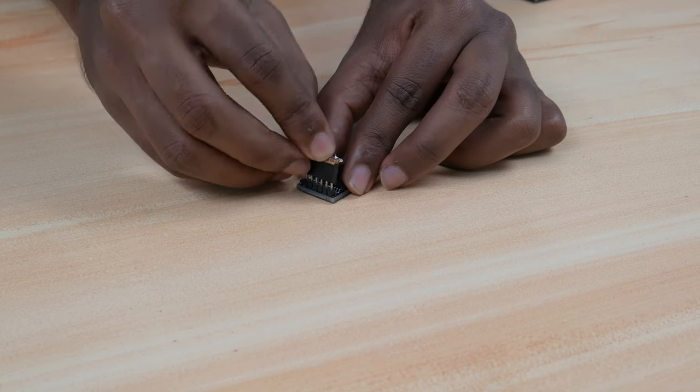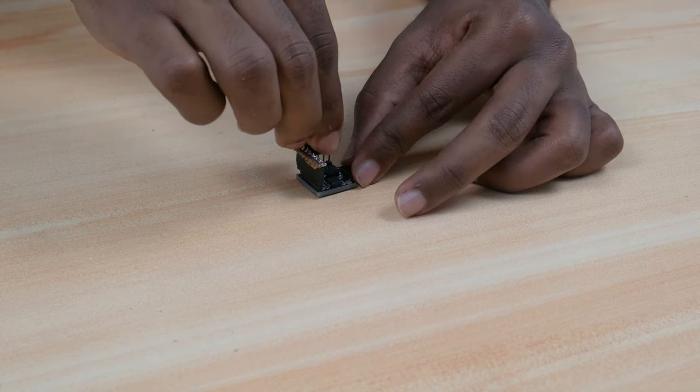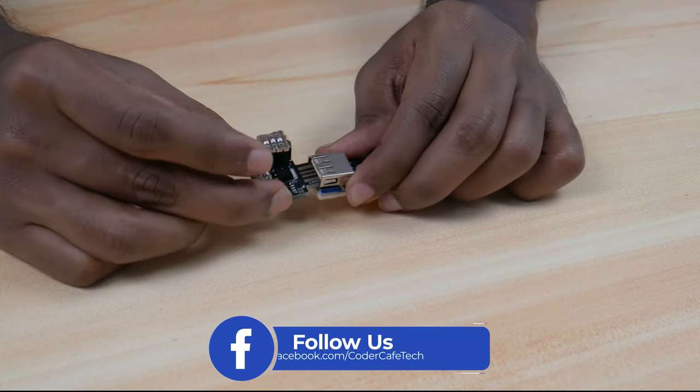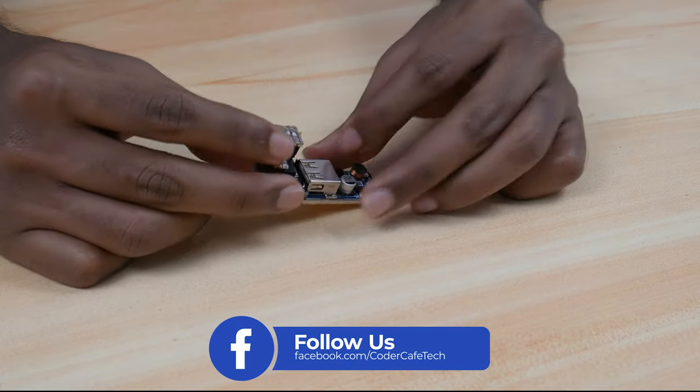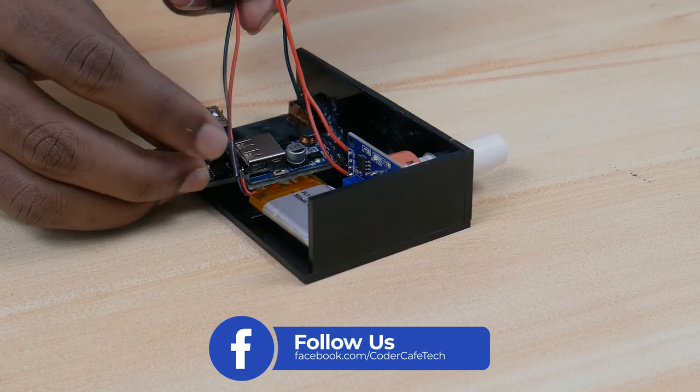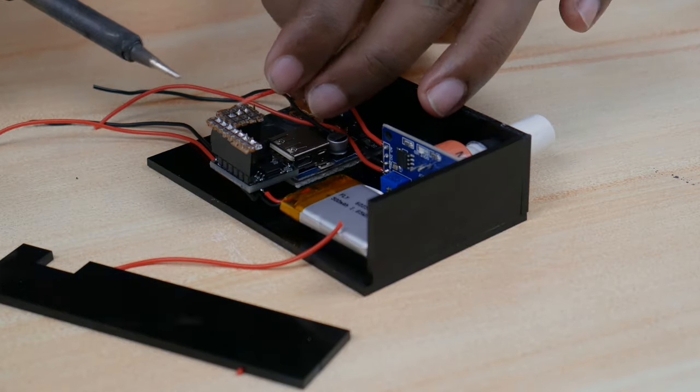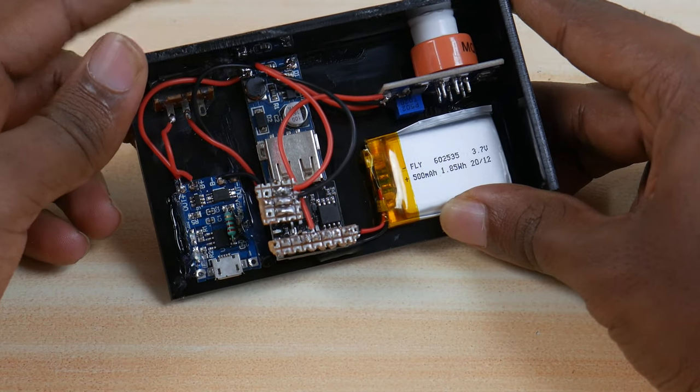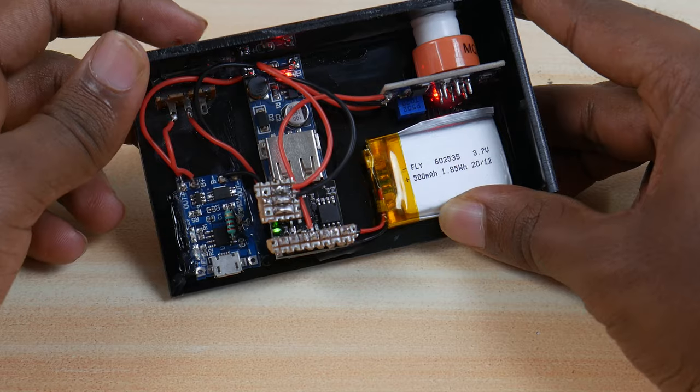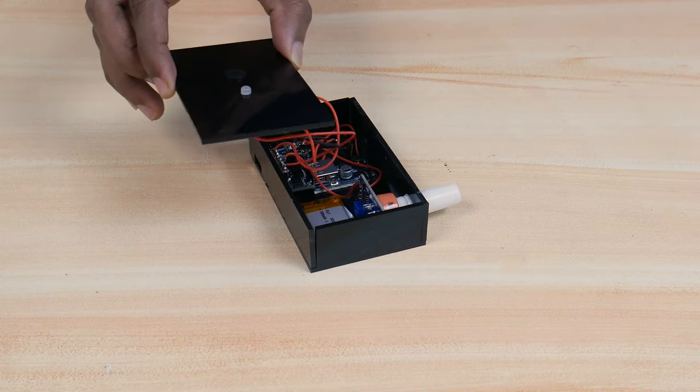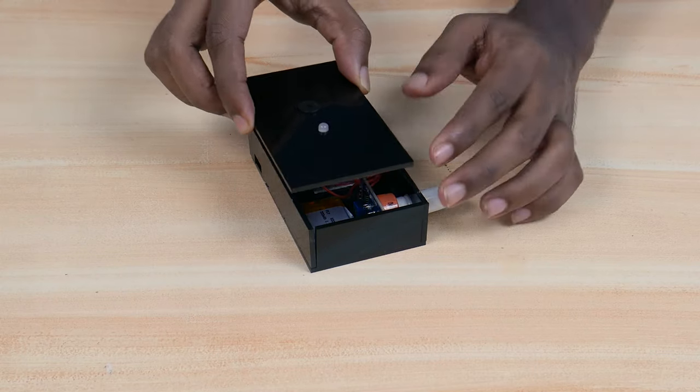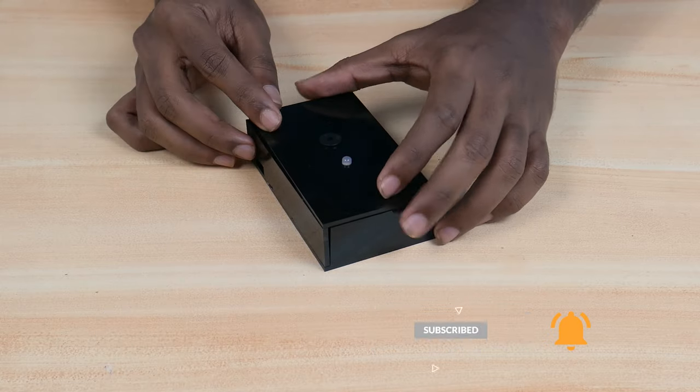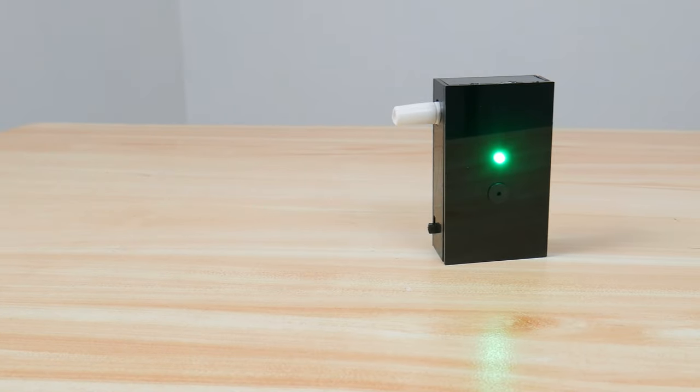We have already soldered the necessary circuits and uploaded the code to the DigiSpark. Let's turn on the switch and check whether the thing is working or not. Yeah friends, it's working. Now build is complete.